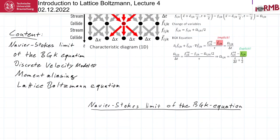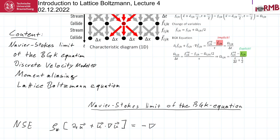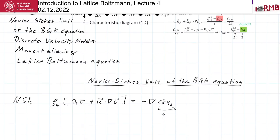Let's briefly recap the Navier-Stokes limit of the Boltzmann equation, or the BGK equation — the Bhatnagar-Gross-Krook approximation. The Navier-Stokes equation has density rho times the time derivative of velocity plus the advection term u dot nabla u, equal to a pressure term: the speed of sound squared times rho-star, which accounts for the pressure, plus tau times the speed of sound squared which accounts for the viscosity term, going into the Laplacian of u.